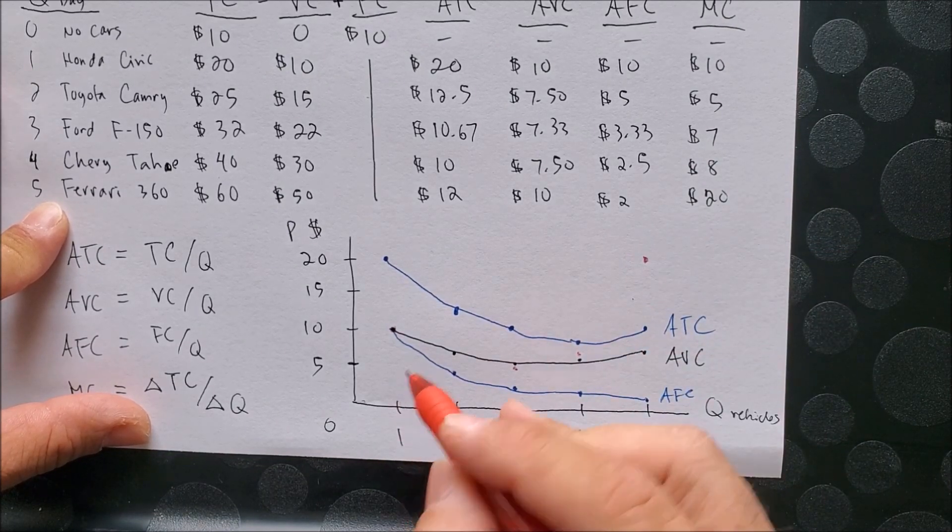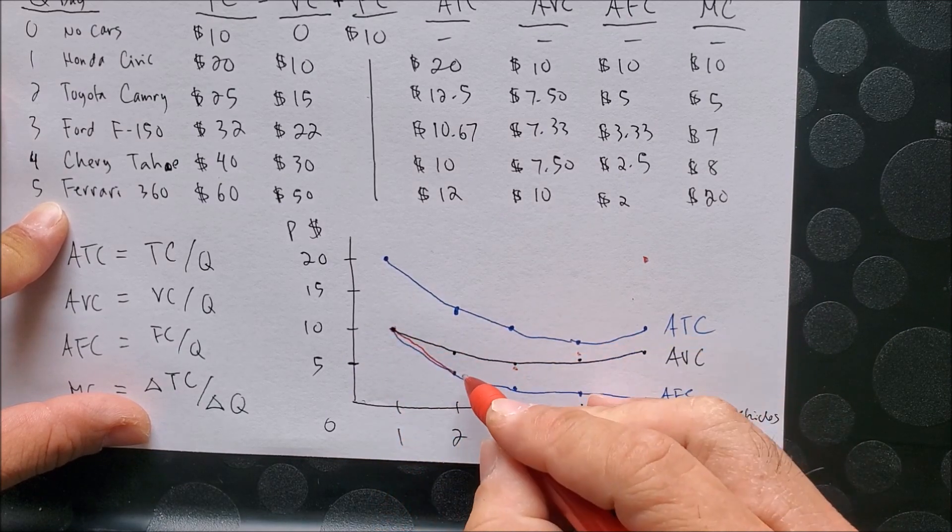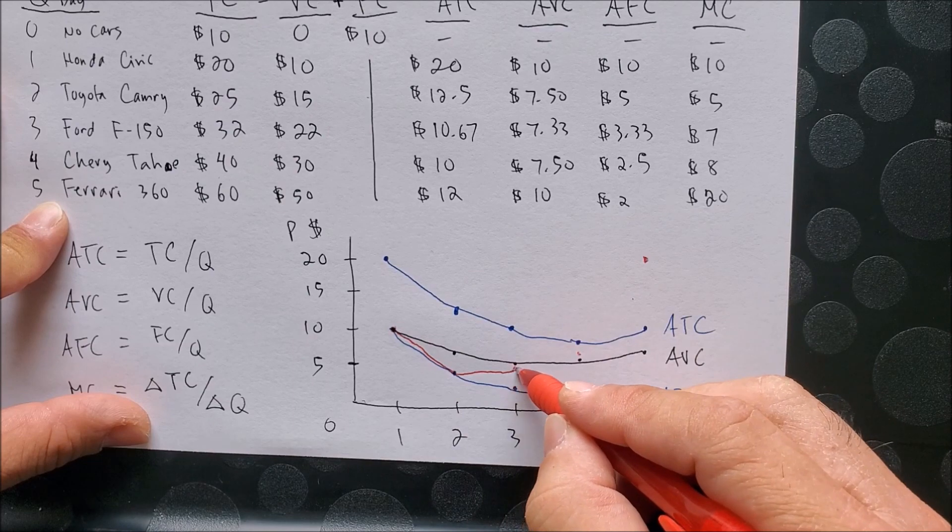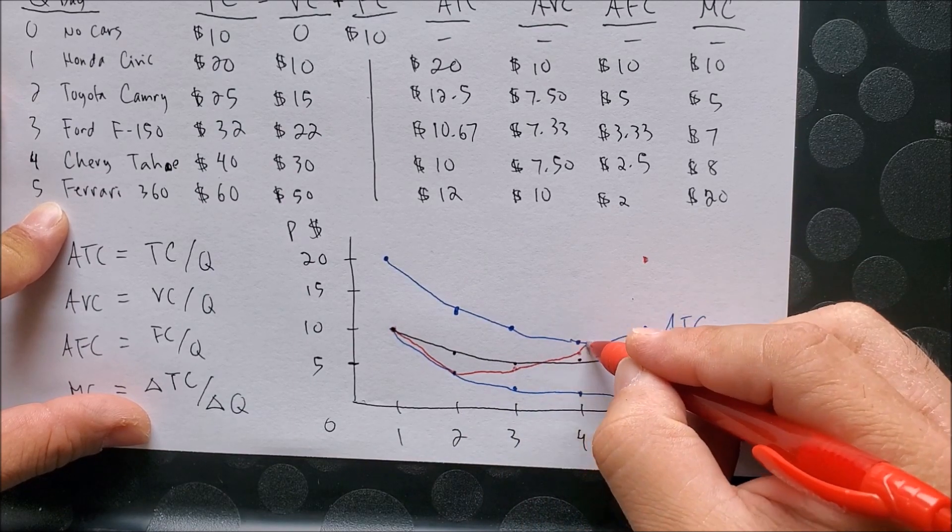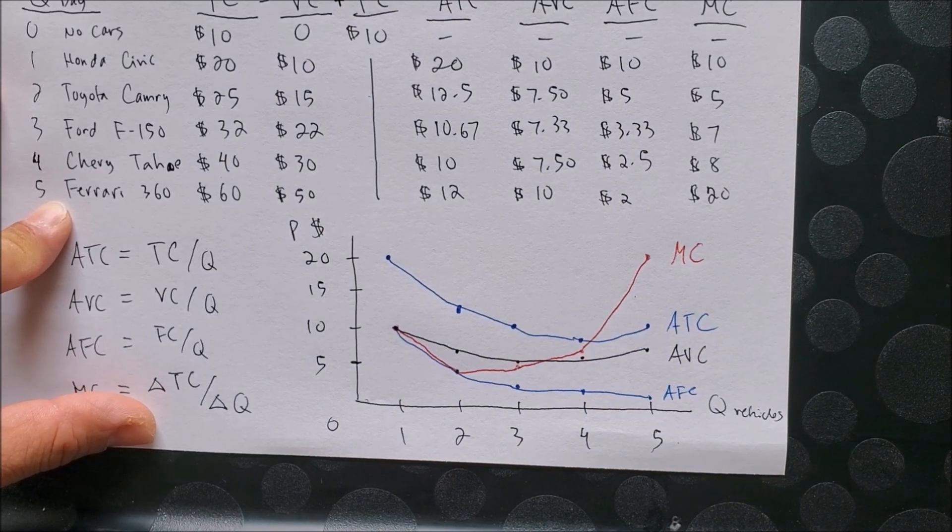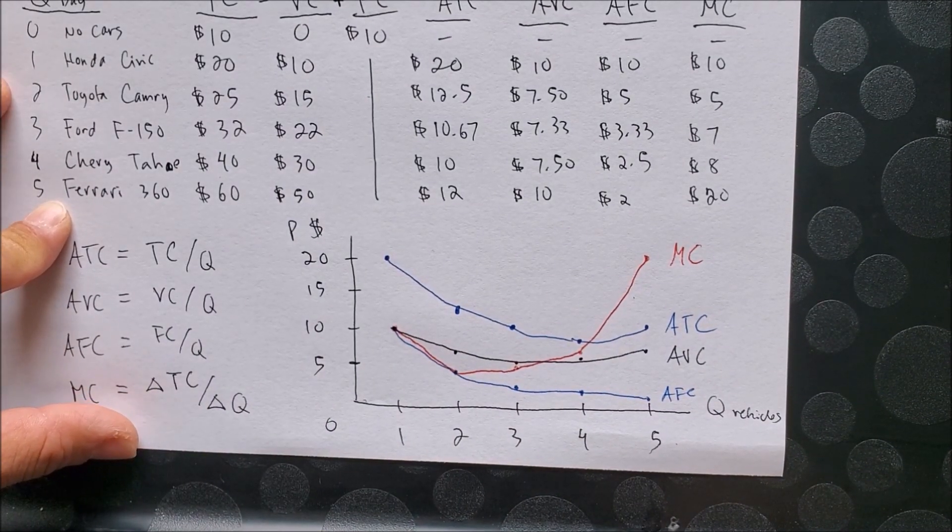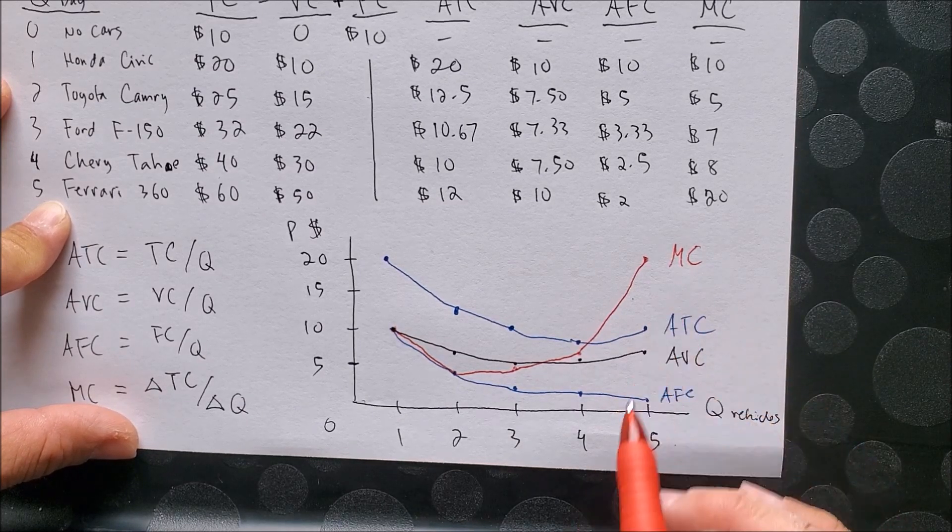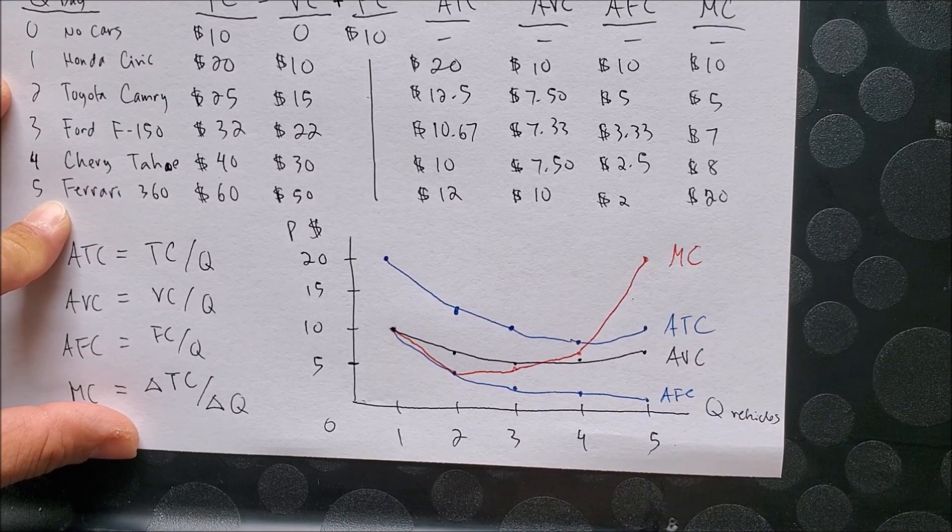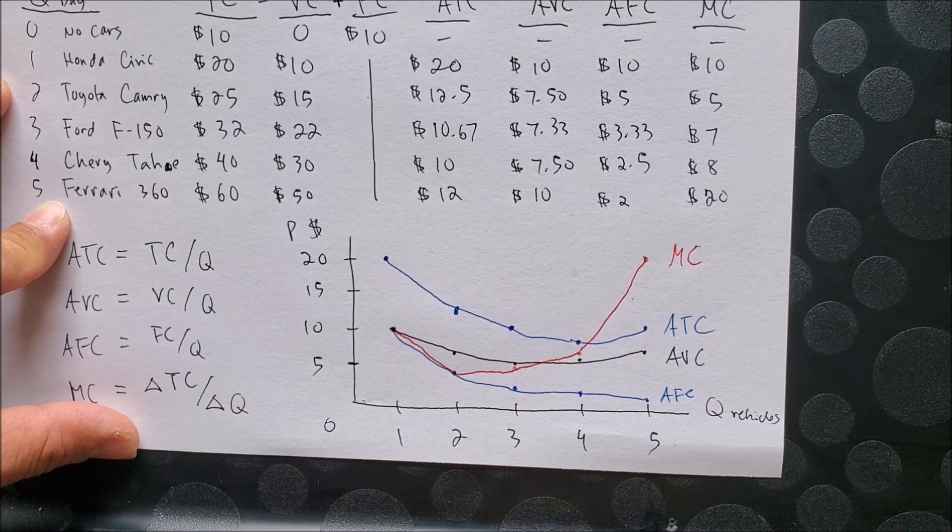So if we were to connect the marginal cost curve, it would look something like this. And to the best of my ability, on this graph, like such. So we could say with confidence that as you wash one more vehicle, the marginal cost will increase more and more. And why?